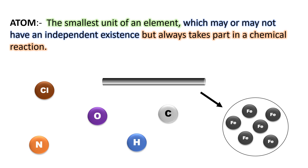So atom is the smallest unit of an element which may or may not have independent existence. What do we mean by may or may not have independent existence? Oxygen exists as O₂ and helium exists as He, a single helium atom. So oxygen has two atoms — that means it does not exist as a single atom. An atom can or cannot have independent existence, but it always takes part in the chemical reaction. Some atoms exist alone like helium, neon, argon — they are called noble gases. Some atoms do not exist alone; they combine with another atom and exist as a molecule.